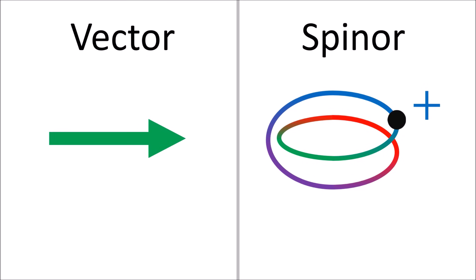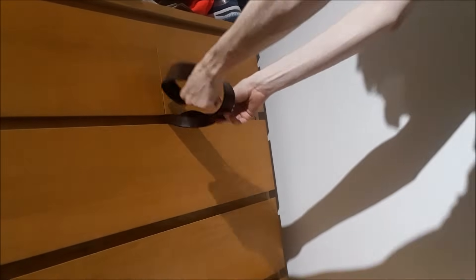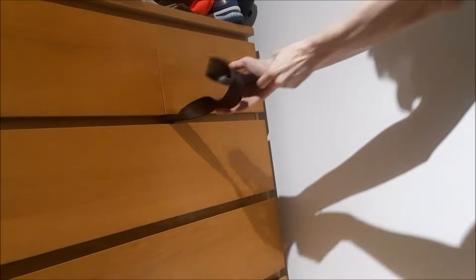This is demonstrated by Dirac's belt trick. If we turn the free end of this belt once, we get a twist that cannot be removed by translating the free end around. However, after a second turn, we can remove the twist by moving the free end like this.